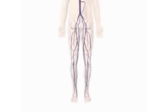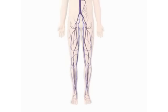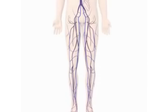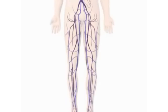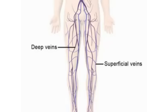This animation shows how deep vein thrombosis, or DVT for short, forms. DVT is a condition where a blood clot forms in a deep vein, usually in the leg. The deep veins pass through the deep tissues of the leg. They transport blood from the legs and feet back up to the heart.